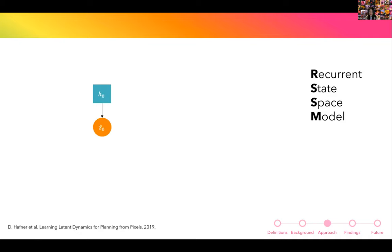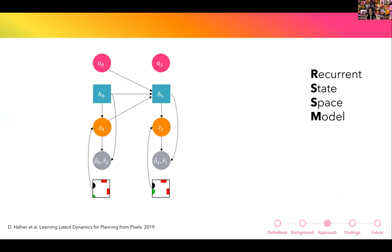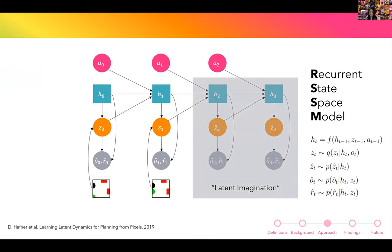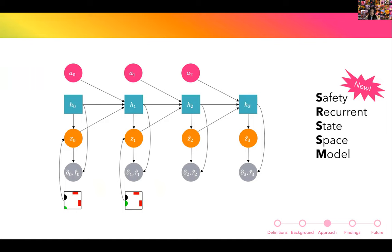The Dreamer works are based on the Recurrent State Space Model (RSSM), which models environmental dynamics in latent space. The state is decomposed into a deterministic component H and a stochastic component Z. This model captures dynamics through time: conditioned on a few observations, it can predict future states. We call this prediction 'latent imagination.'